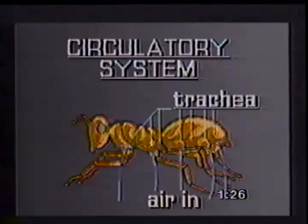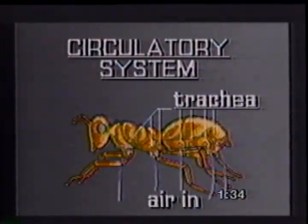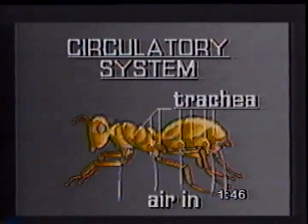An insect has a heart, blood, and a circulatory system. The blood passes into the heart by means of holes that are equipped with valves. When the heart contracts, these holes close and the blood is driven out through the arteries. Their circulatory system is not greatly developed because they don't depend on the circulation of blood for their oxygen supply. Insects have tiny branching tubes that end in little air holes in the sides of the body. The air comes in right from the surface of the body and goes directly to the cells. These little tubes are called trachea.